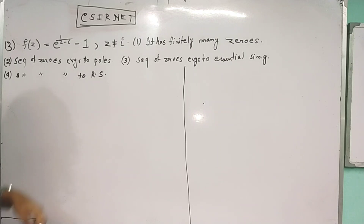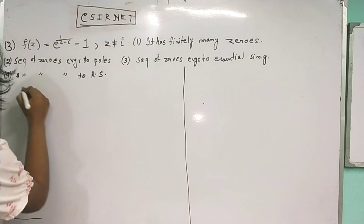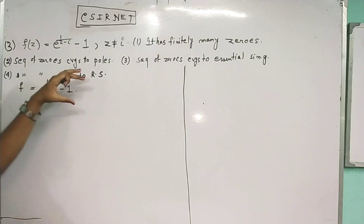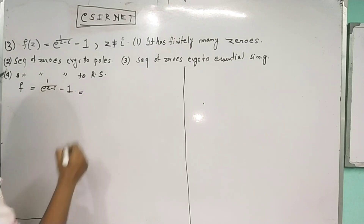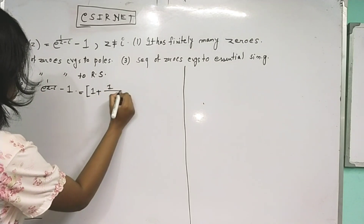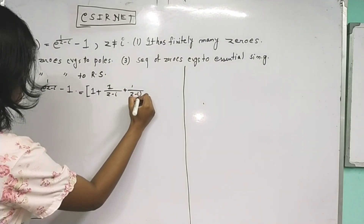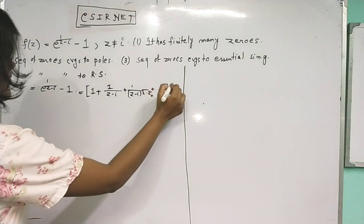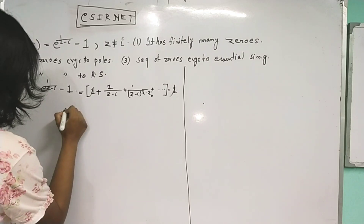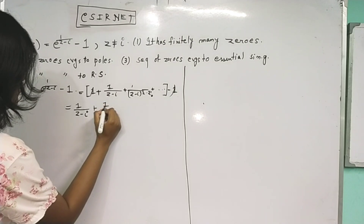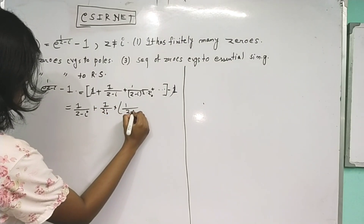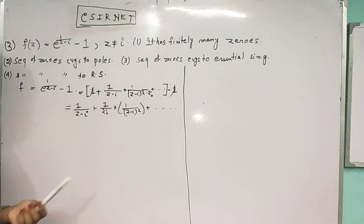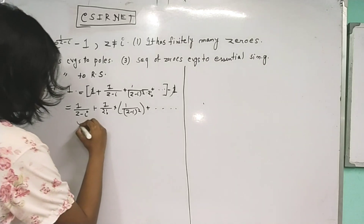The function given is f(z) = e^(1/(z-i)) - 1. We can expand this function. The formula for e^(1/(z-i)) is 1 + 1/(z-i) + (1/(z-i))²/2! + ... The constant 1 and -1 cancel out, leaving 1/(z-i) + (1/2!) × (1/(z-i))² plus infinitely many terms. This part is called the principal part.